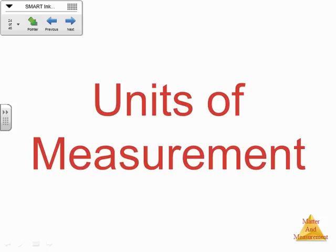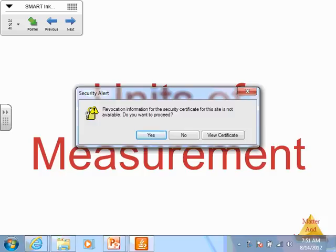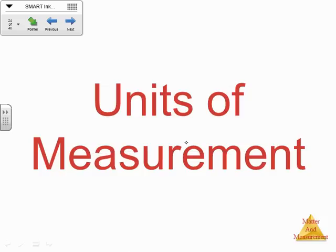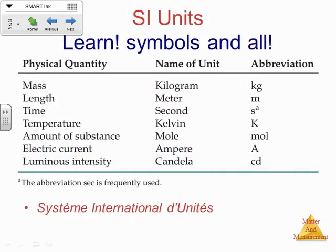We are just flying through some of the stuff that we learned last year. So, units of measurement — this is going to be a fairly simple review. The ones I want you to know on this list are the top six, everything except for luminous intensity. I don't really care that much about the candela; that's more of a physics thing. But the rest of these we will use throughout the year. Even the ampere — we'll use that when we start talking about electrochemistry.